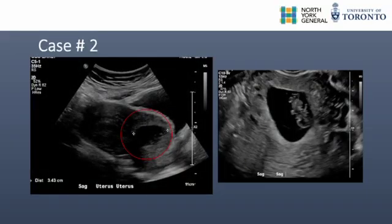In our second case, we have an asymptomatic 30-year-old G4A2P1 presenting with ultrasound findings of a type 1 c-section scar pregnancy. The ultrasound images show a gestational sac that distends the space within the c-section scar defect with a preserved myometrial layer, with the gestational sac abutting the endometrial cavity.